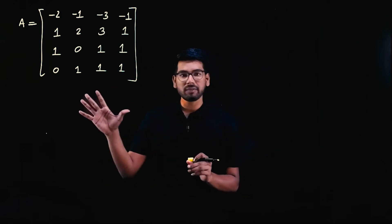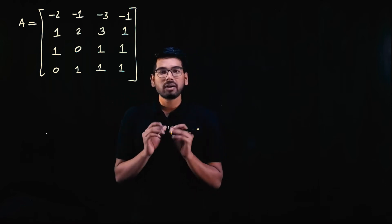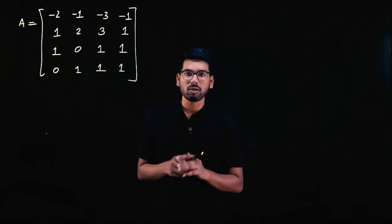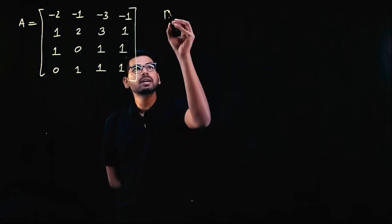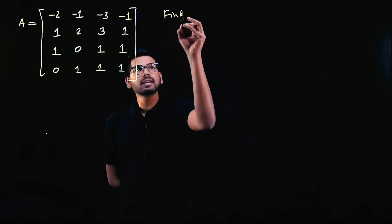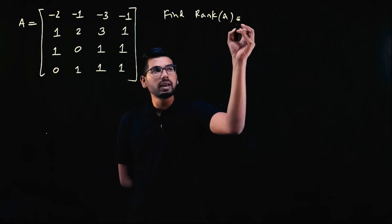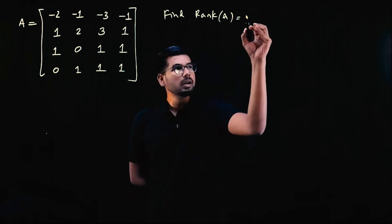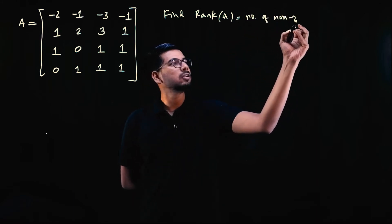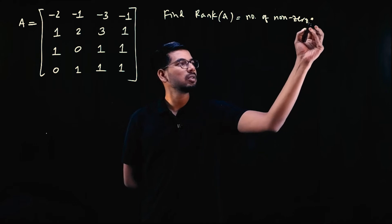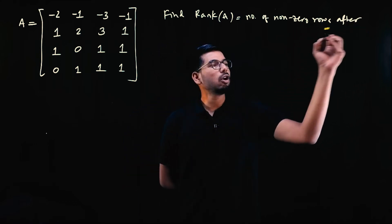We started with rank of the matrix. On the matrix, we have to find rank of the matrix. What is rank of A? Rank of A is the number of non-zero rows after row operations.